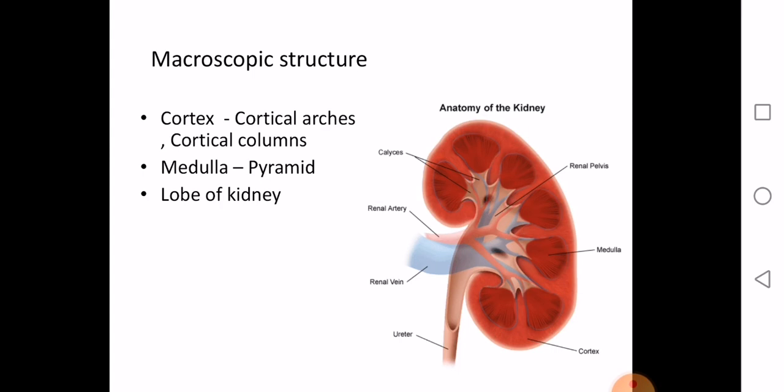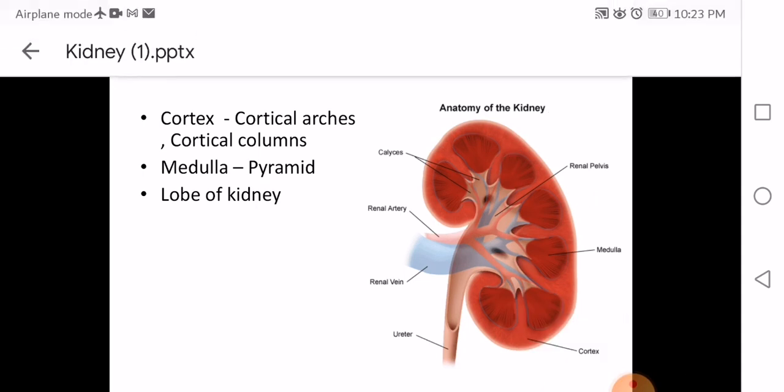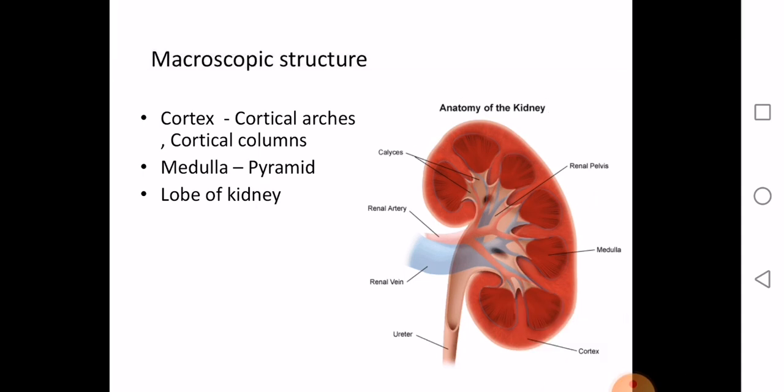The cortex has two parts: one part forms an arch over the base of each pyramid — these are the cortical arches. The other part lies between the pyramids — these are the cortical columns. A cortical arch plus a pyramid constitutes a lobe of the kidney.